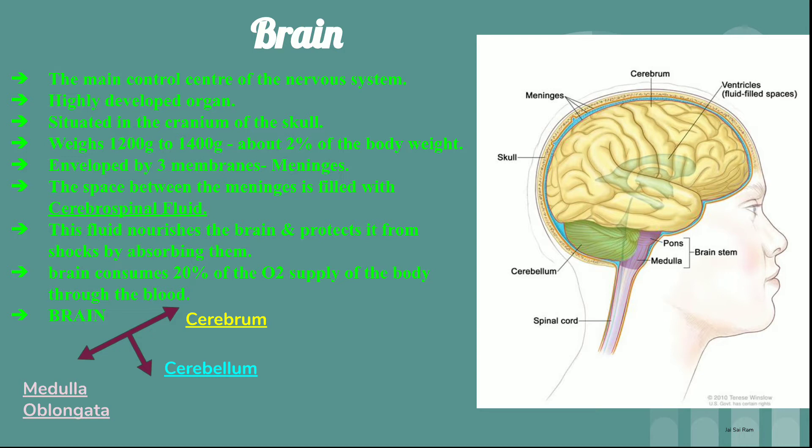These membranes are called meninges. Between the three meningeal layers there is a fluid known as cerebrospinal fluid. This fluid nourishes the brain and also protects it from shocks by absorbing them. The brain consumes 20% of the oxygen that is supplied throughout the body.